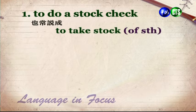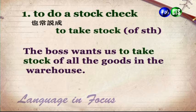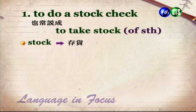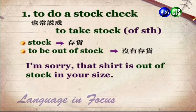焦點用法就是我們把剛剛那個對話裡面一些值得大家注意的字詞用法拿出來特別講，因為英文能力進步很重要的關鍵在於了解這些字怎麼用。To do a stock check / To take stock of something — 意思差不多。The boss wants us to take stock of all the goods in the warehouse. 老闆要我們把倉庫裡面的貨清點一下。Stock 是存貨的意思。To be out of stock — 沒有存貨。I'm sorry, that shirt is out of stock in your size. 很抱歉，那件襯衫沒有你穿的尺寸了。